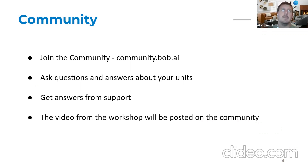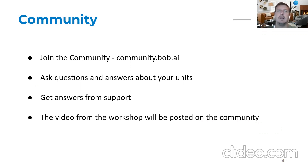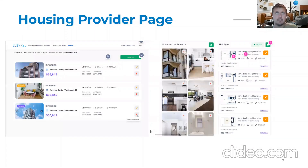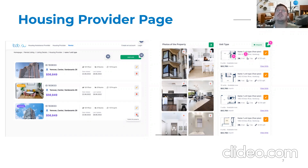One thing we recently added is the community. You can join the community now at community.bob.ai or directly through Bob.ai when you log in — Georgia actually sent the link in chat so you can join there now. The video from this workshop that is being recorded will be posted on that page. This is the housing provider page coming early in September, where you'll have an option to list all your units, properties, and floor plans, and clients will be able to see more detail about all of them.